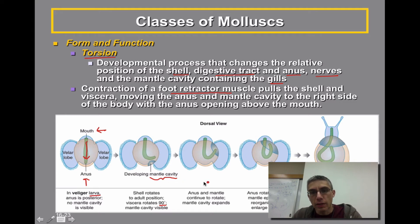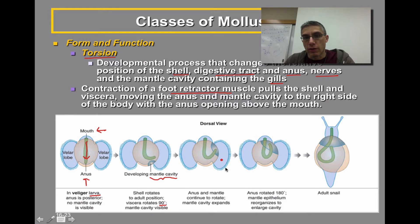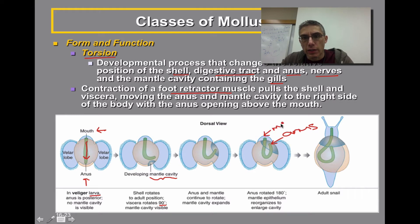That rotation is going to continue until the anus and the mantle are approximately 180 degrees from their original position. You can see the continuing rotation of that digestive tract shown in green, and the blue area is the continued development of that mantle cavity. Once it's completed that rotation, the anus is now in very close proximity to the mouth of the animal, as you actually reach the adult snail. The mantle cavity has also become very large in these animals.